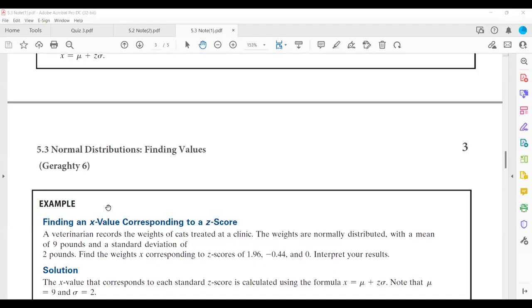Very good. So in this example, you have a vet record of the weights of the cats. You do not have the actual weights. What do you have are the z-scores. So when you see 1.96, it says my z-score of the weight is 1.96.